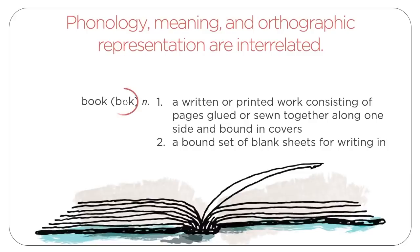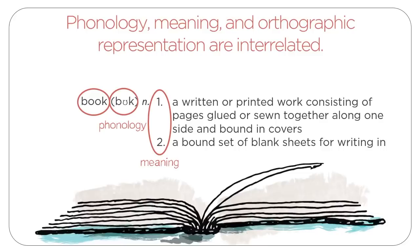First is how it sounds when you say it — 'book' — which is an example of phonology. Second is what it means: a written or printed work consisting of pages glued or sewn together, or a bound set of blank sheets. This is an example of meaning. Third is what the word looks like: 'book' is spelled B-O-O-K, letters of the English alphabet. This is an example of orthographic representation.